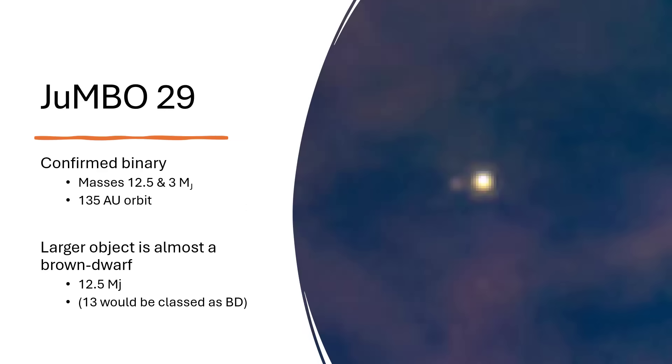We also were able to confirm Jumbo 29, and this is actually an optical image of Jumbo 29. The two objects there, the bright one at mass 12.5 Jupiter masses and its smaller three Jupiter mass companion there, 135 AU apart, orbiting around each other. The larger one is pretty much on that limit, almost large enough to be classed as a brown dwarf. That makes sense because the larger the object, the more gravity it has, so the more it's able to hang on to an orbiting companion.